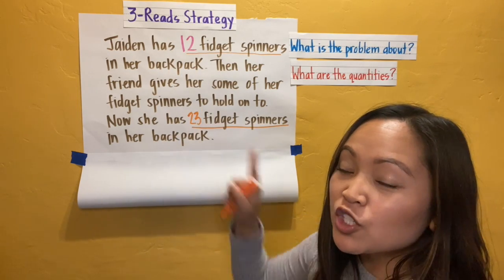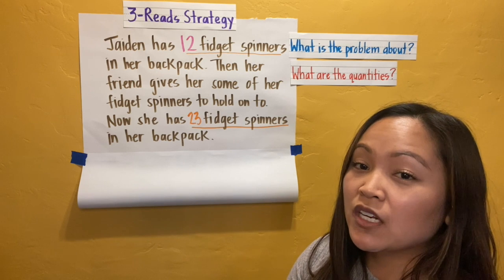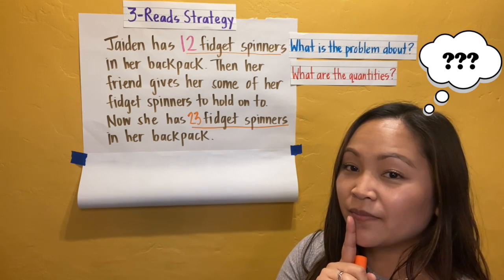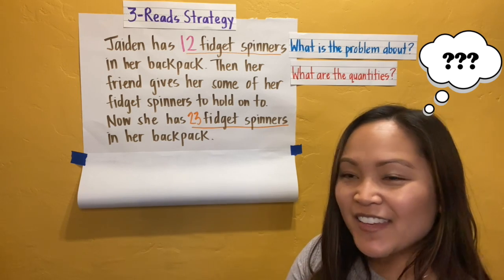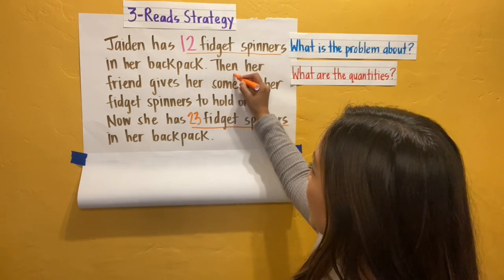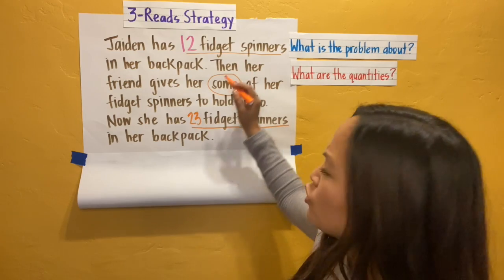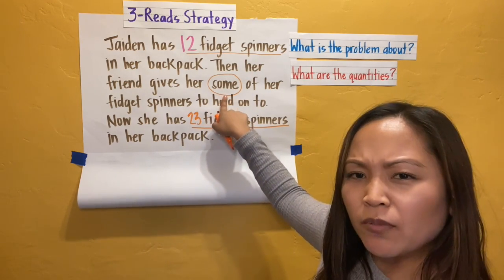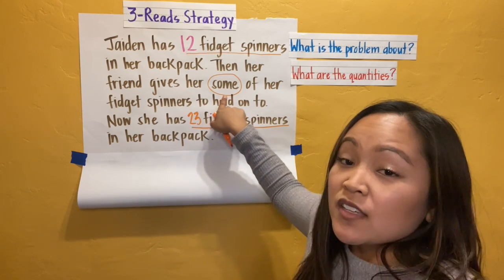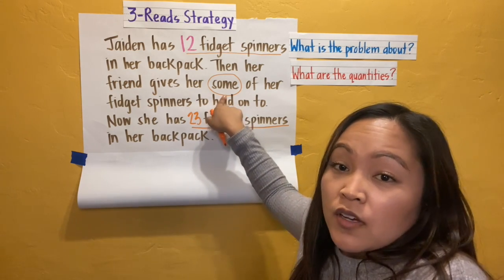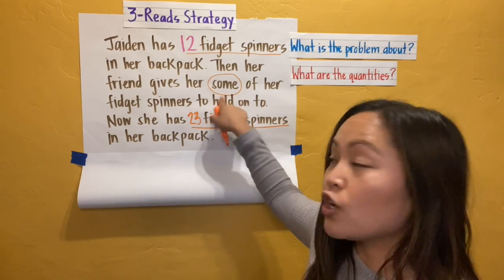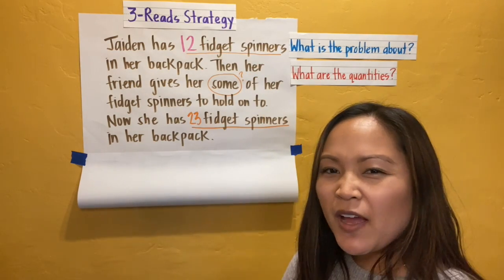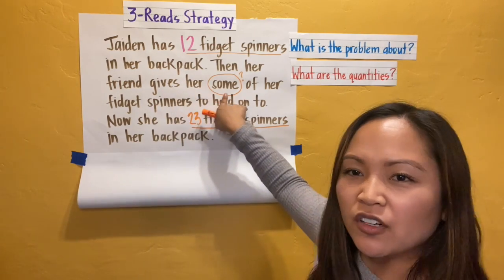There was one tricky quantity in here that was represented by a word. Did you figure it out? Yes, it is the word 'some.' Do we know how many 'some' is in this problem? No. Some could mean two, some could mean 15 — we don't know. So I'm going to draw a little question mark because I'm actually not sure how many of her fidget spinners Jaden's friend gave her.